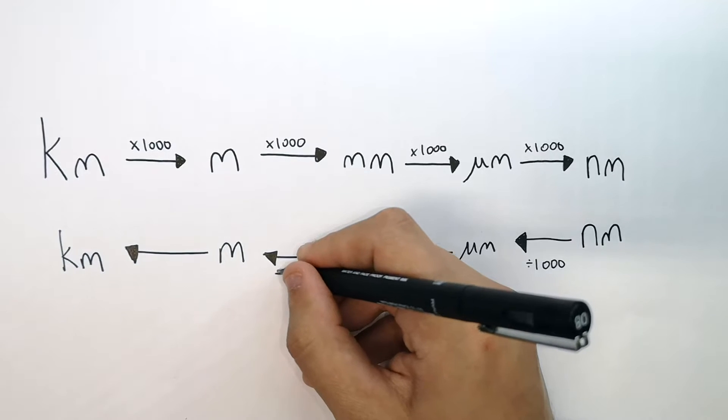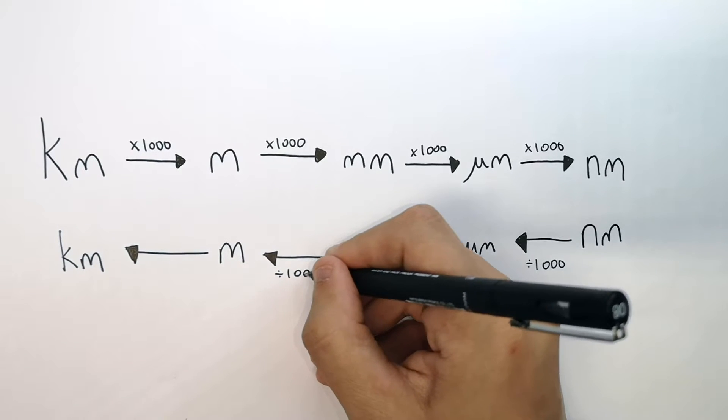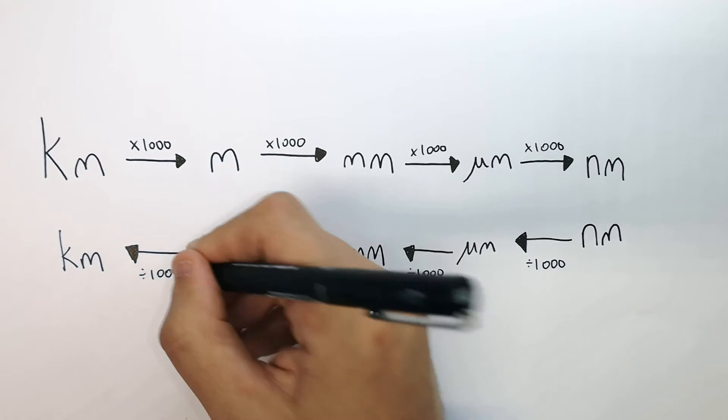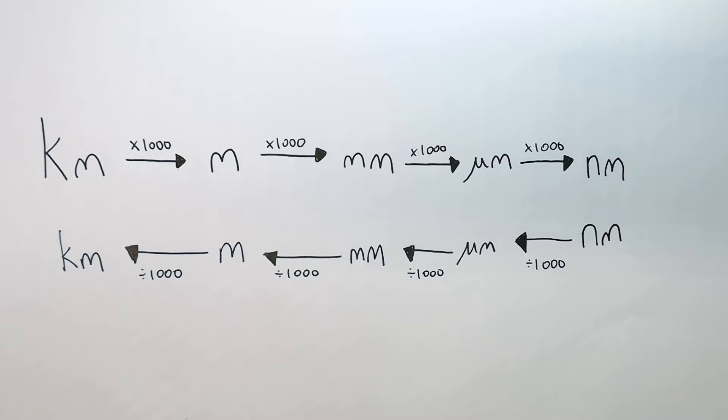From millimetres to metres, you divide by a thousand, and then 1,000 metres to go to 1 kilometre, so you divide by 1,000. That is how you convert units.